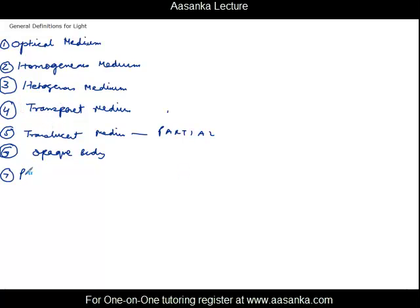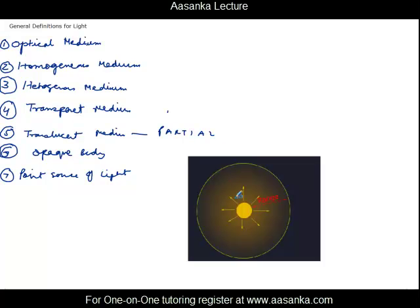Next is the definition of point source of light. A very small source of light — like a very small bulb or a very small candle — can be termed a point source of light. The important condition is that the source has to be very, very small, like a pinhead.